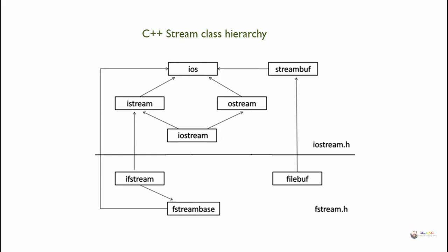Similarly, for file handling output stream operations, there is a class named ofstream, which is derived from fstreambase and ostream. To perform both input and output file operations together, there is a class named fstream, which is derived from fstreambase and iostream.